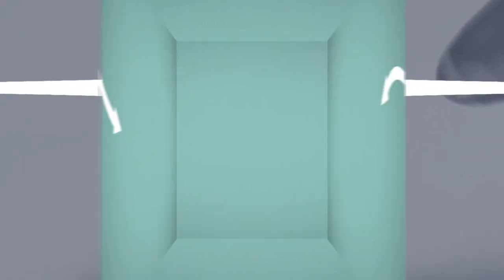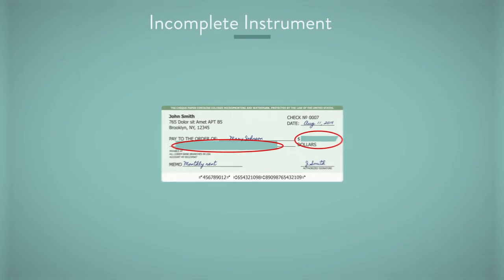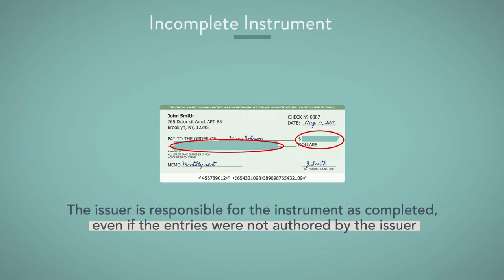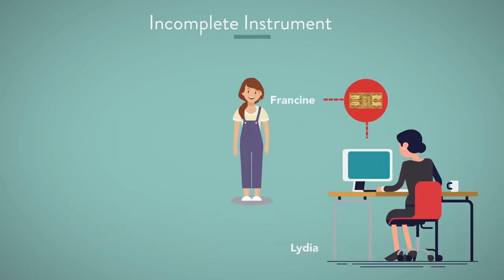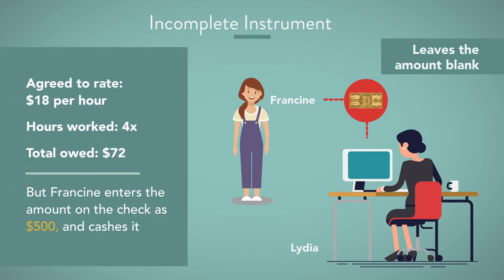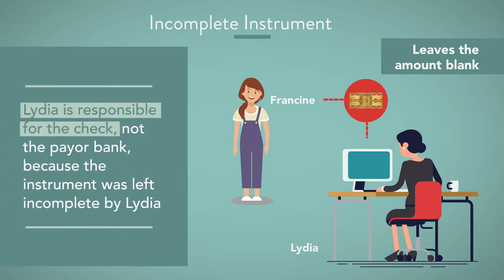However, the rule is different for an incomplete instrument. In that case, the issuer is responsible for the instrument as completed, even if the entries were not authored by the issuer. For example, Lydia writes a check to Francine for landscaping work and leaves the amount blank, agreeing to pay $18 per hour. Francine spends four hours — entitling her to $72 — but enters $500 on the check and cashes it. Lydia is responsible for the check, not the payer bank, because the instrument was left incomplete by Lydia.